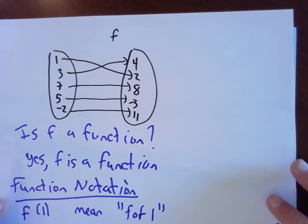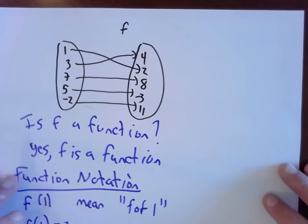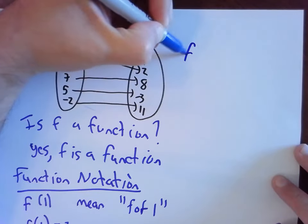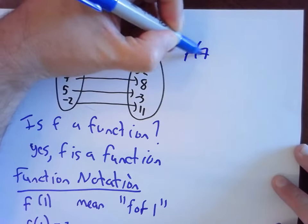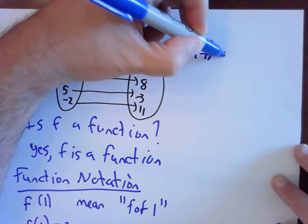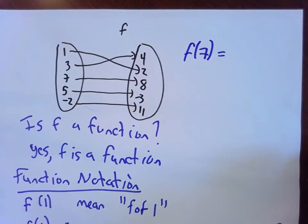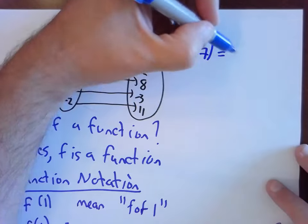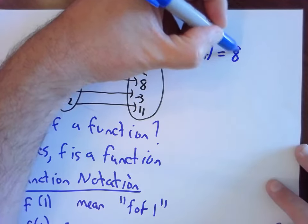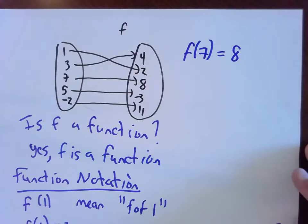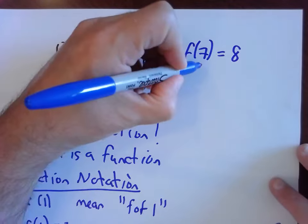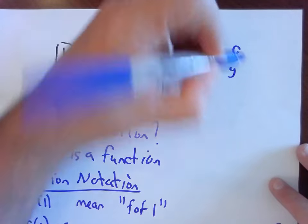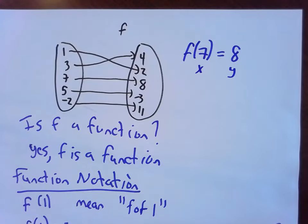Using this same function, what would f of 7 be? It's pretty obvious. You can look at 7, come over, and the answer is 8. Seven's the input, that's my x value. Eight's the output, that's my y.